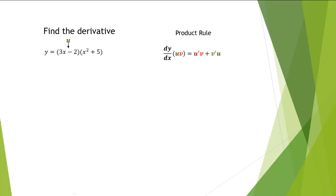We'll set the second factor, x squared plus 5, equal to v. Now we'll find the remaining elements for the product rule. We're given u as 3x minus 2. From u, we can find u prime. u prime is equal to 3.